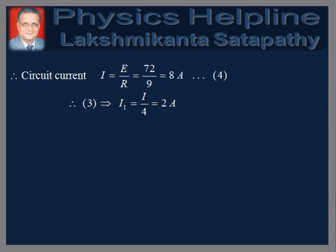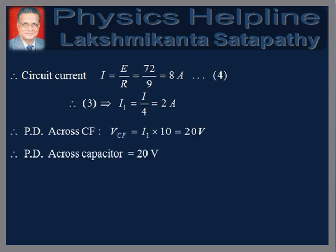Therefore, using equation 3, I1 = I/4, which is equal to 2 amperes. The potential difference across CF is equal to I1 into 10, which is equal to 20 volts. Therefore, the potential difference across the capacitor is also equal to 20 volts.